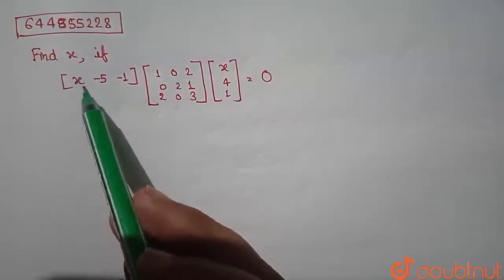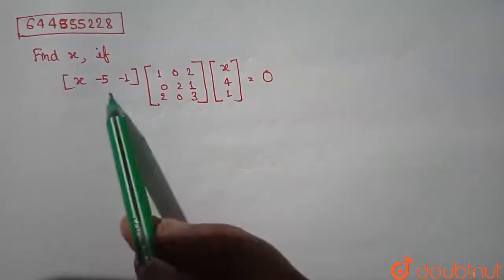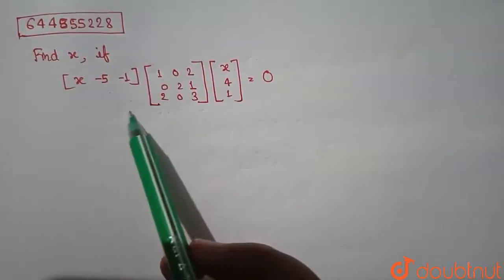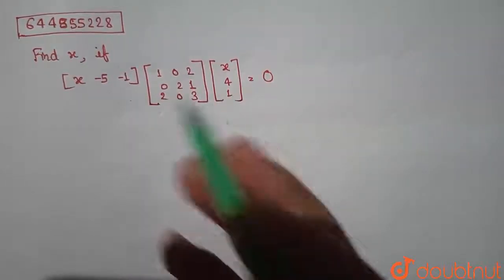Now in this question we have to find x, so firstly we will multiply the first two matrices, then after the final multiply product we will multiply the third matrix.